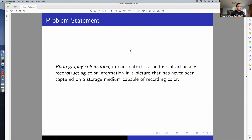Photography colorization, as a quick introductory definition in our context, is the task of artificially reconstructing color information in pictures that has never been captured on a storage medium capable of recording color. You can imagine your old photos in black and white.